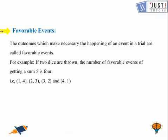Now let us see what is favorable event. So in this one the outcomes which make necessary the happening of an event in a trial are called favorable events. So again with the example we can see. So if two dice are thrown, the number of favorable events of getting a sum of 5 is 4.